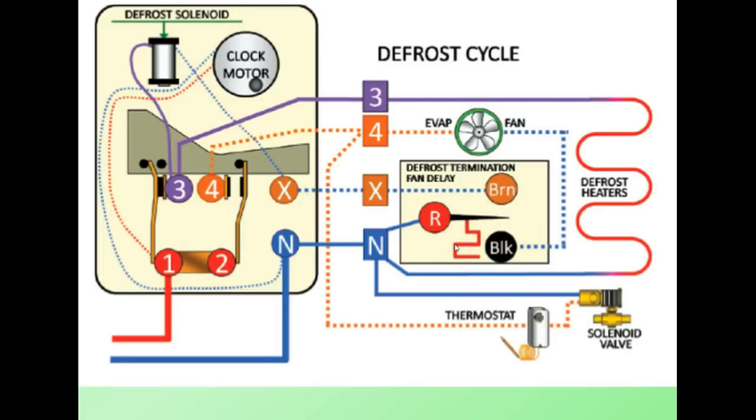As we're melting the ice off of the coil, the temperature of that coil begins to rise and our defrost termination fan delay is sensing that temperature rise and is slowly moving this contact up as the temperature increases.